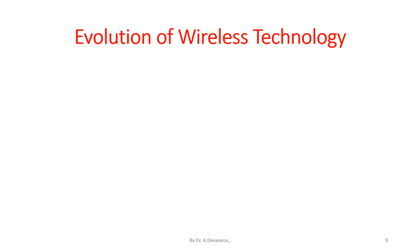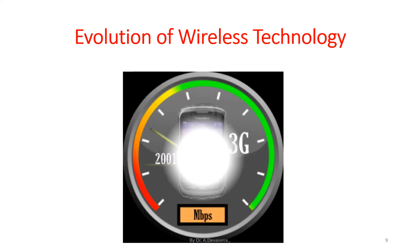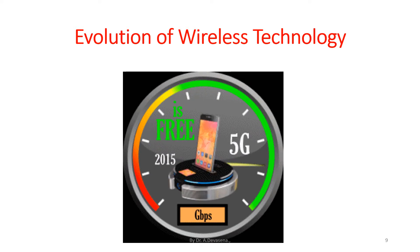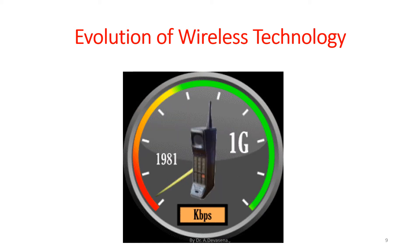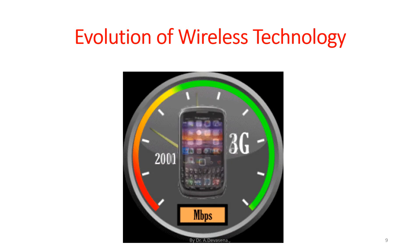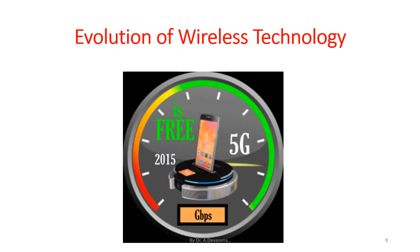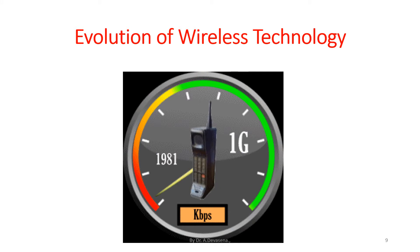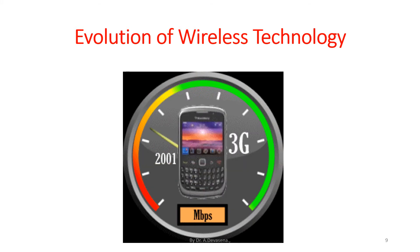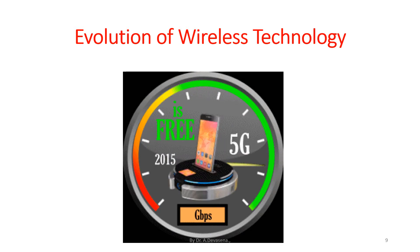Let's see the evolution of wireless technology. 1G started around 1981, 2G around 1992, 3G in 2001, 4G in 2010, and 5G in 2015. The speed of 1G and 2G is measured in kbps; 3G and 4G in Mbps; and 5G is around Gbps — that is gigabits per second.